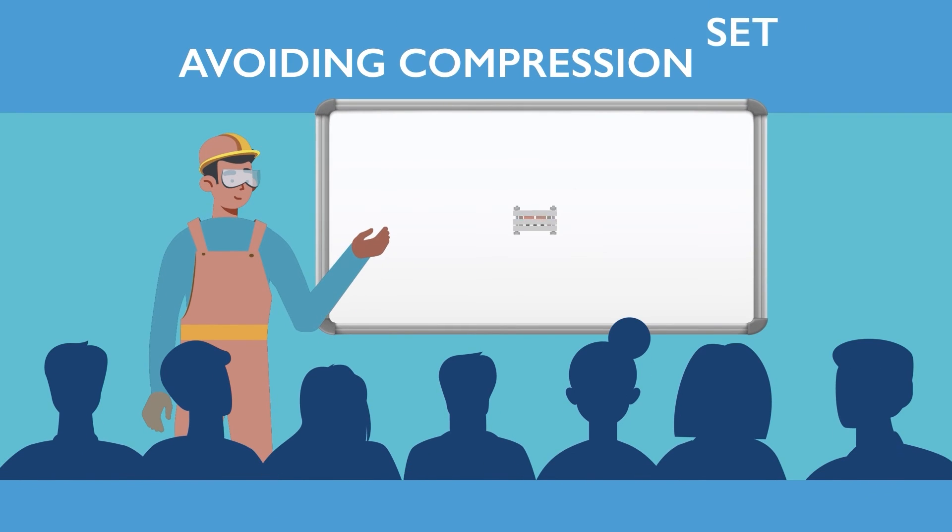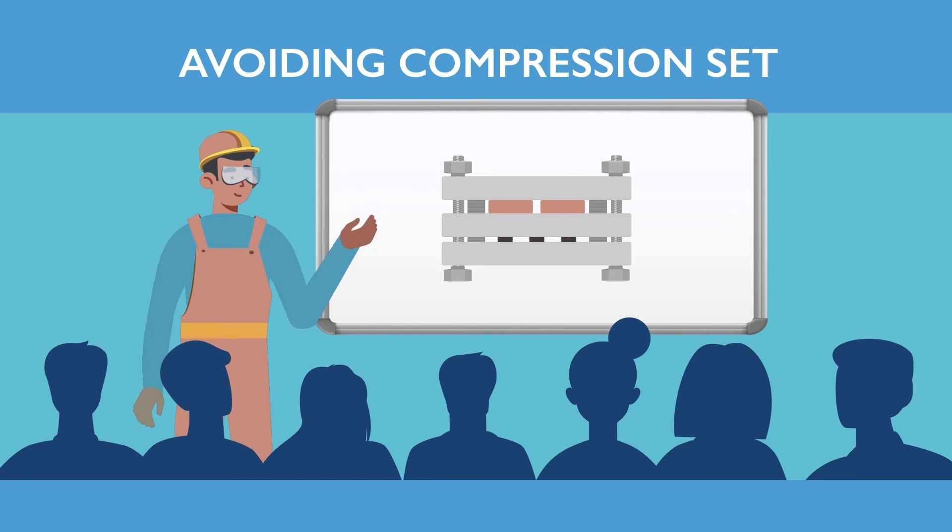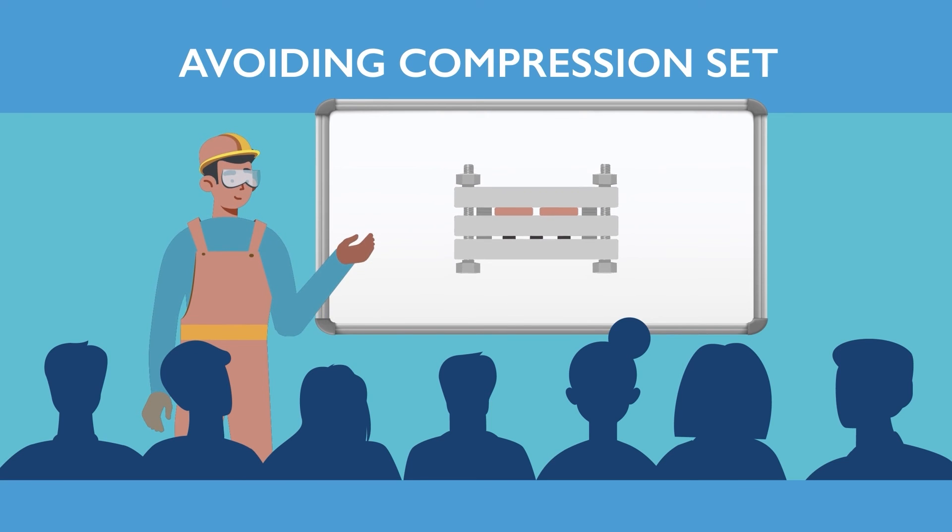Seal failure due to compression set can have huge financial and reputational cost to operators. To avoid compression set, making the correct choice of elastomer sealing material is crucial. This decision is based on a range of factors including the type of application and the length of time the seal can expect to be compressed in that application.